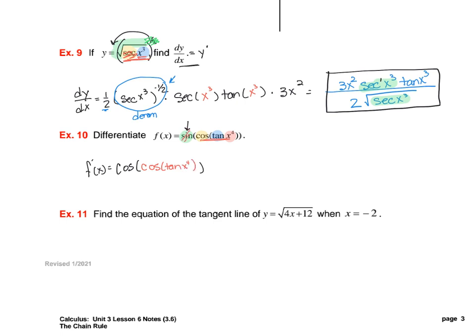And then I'm done with the sine. So now I'm going to move on to the cosine. The derivative of cosine is negative sine, and remember again I leave all of this the same — tan of x to the fourth. And now I'm done with cosine. Then I take the derivative of the tangent, which is secant squared of something, and again my something is my x to the fourth. And then I'm done with my tangent. And then I take the derivative of the x to the fourth, which would be 4x cubed.